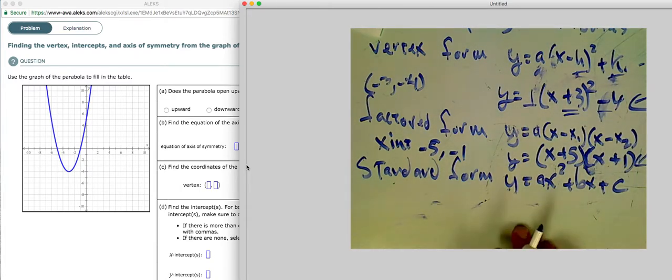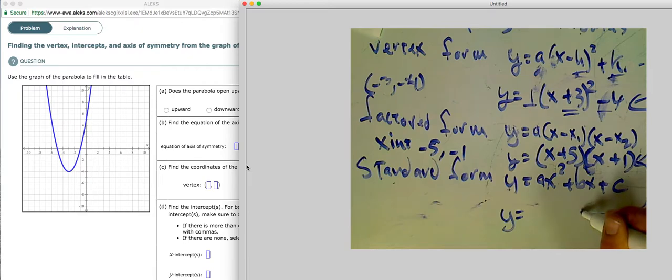Now, the final one is standard form. Now, standard form is a little bit trickier to find than vertex or factored form. But if we know this, then I bet we can find standard form simply by expanding this.